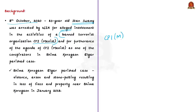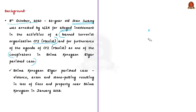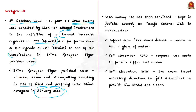The banned terrorist organizations are listed in the first schedule to the Unlawful Activities Prevention Act of 1967, and CPI Maoist is one of them. He was arrested for the alleged furtherance of the agenda of CPI Maoist by being one of the conspirators in the Bhima Koregaon Elgar Parishad case. This case pertains to widespread violence, arson, and stone pelting which resulted in loss of lives and property near Bhima Koregaon in January 2018.